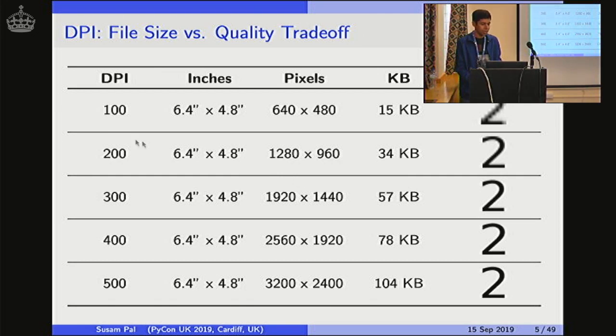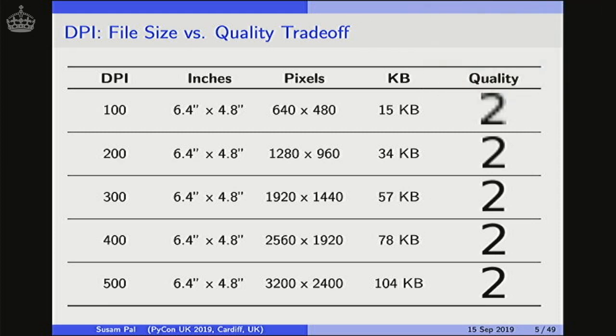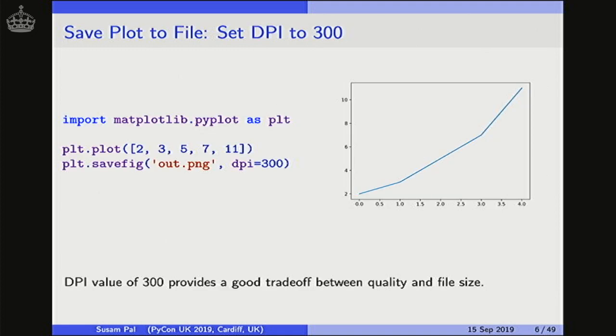So if you look at 100 DPI, the 2 is quite blurred. With a DPI of 300, it's much smoother. And as you increase the DPI, the plot keeps getting smoother and smoother, although the file size increases. So in practice I've found that with a DPI of 300, you get a good compromise between the file size and the quality. So I usually go for a DPI of 300 when I'm saving plots to image files.